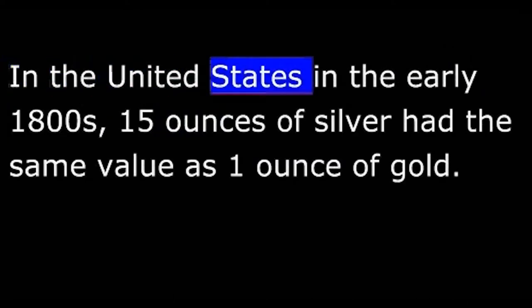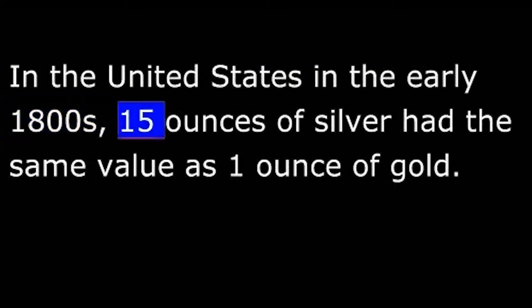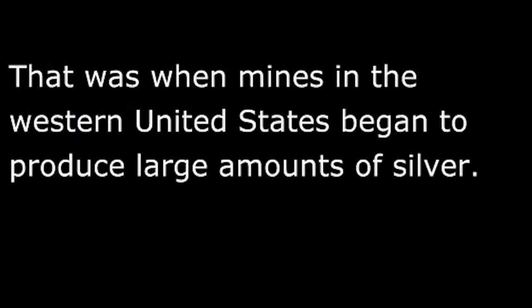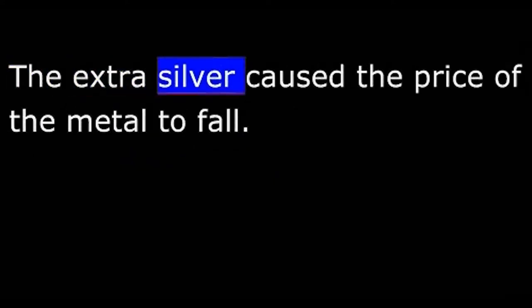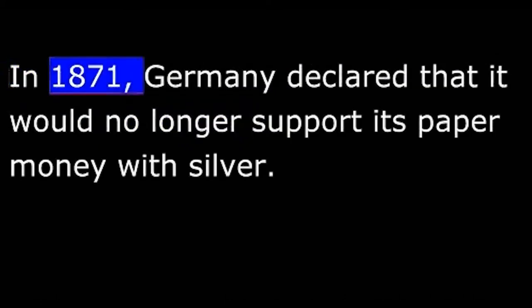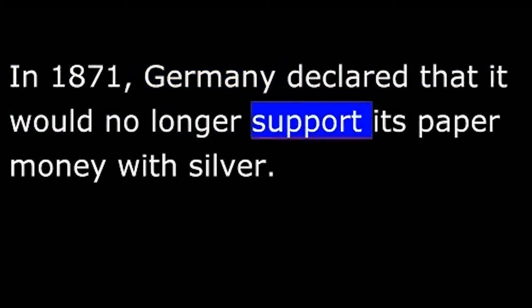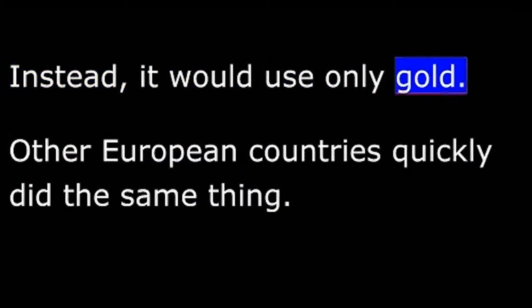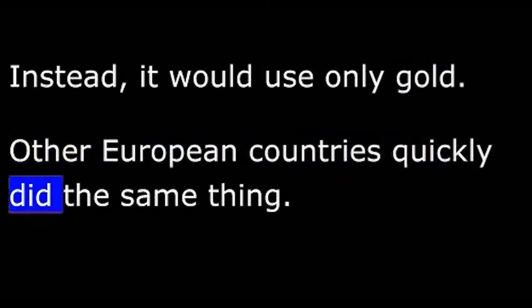In the United States in the early 1800s, 15 ounces of silver had the same value as one ounce of gold. This value did not change until after 1860. That was when mines in the western United States began to produce large amounts of silver. The extra silver caused the price of the metal to fall. In 1871, Germany declared that it would no longer support its paper money with silver. Instead, it would use only gold. Other European countries quickly did the same thing.